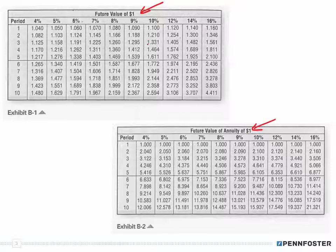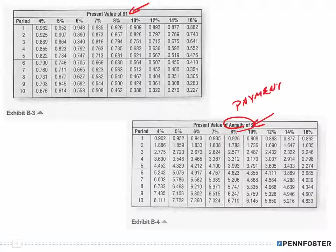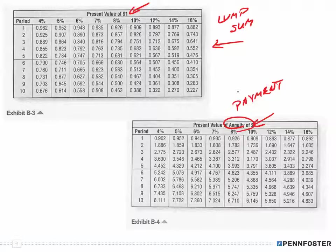You'll be able to use just these tables from the book without needing anything outside of it. These are the future value tables. The next slide has the present value tables — the present value of a dollar and the present value of an annuity. Remember, an annuity is nothing more than a payment.